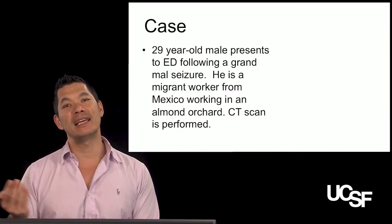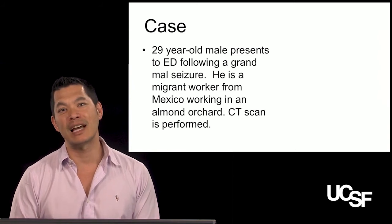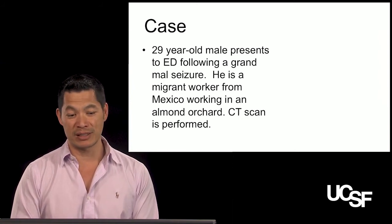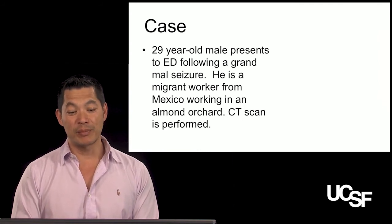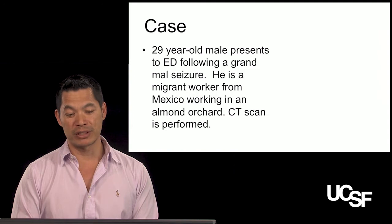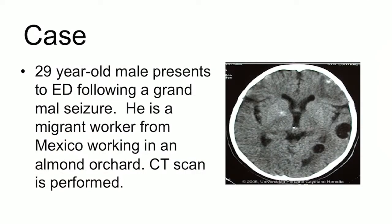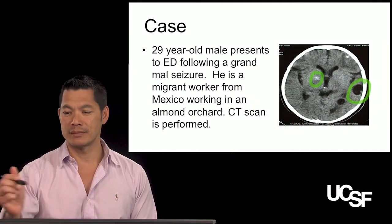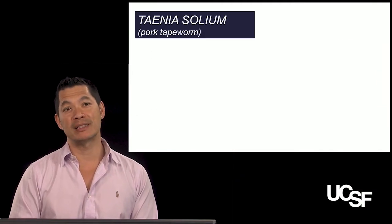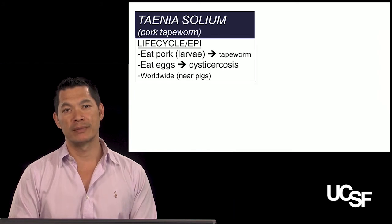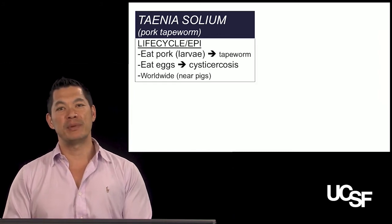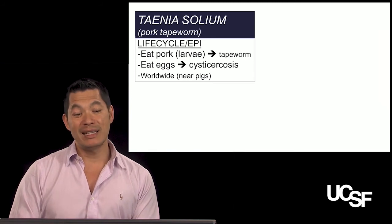A 29-year-old male presents to the emergency department following a grand mal seizure. He's a migrant worker from Mexico working in an almond orchard. A CT scan shows large cysts and calcified areas — both pathognomonic for neurocysticercosis, caused by the parasite Taenia solium, or pork tapeworm.